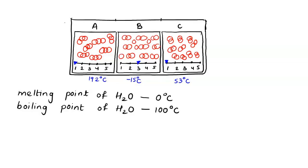Hello students, let's discuss the question. In this question, we have three sets of sketches showing pure molecular compounds of water, H2O. By observing these sketches, we need to say what happens at 192 degrees Celsius, what happens at minus 15 degrees Celsius, and what happens at 53 degrees Celsius. The melting point of water is given as 0 degrees Celsius and the boiling point is given as 100 degrees Celsius.